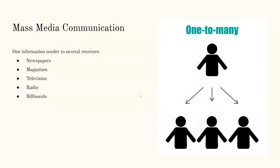Traditional communication, particularly mass media communication, is going to be a one-to-many model. So newspapers, magazines, TV, radio, even things like billboards — you have one person or one corporation sending a message out to a large group of people.